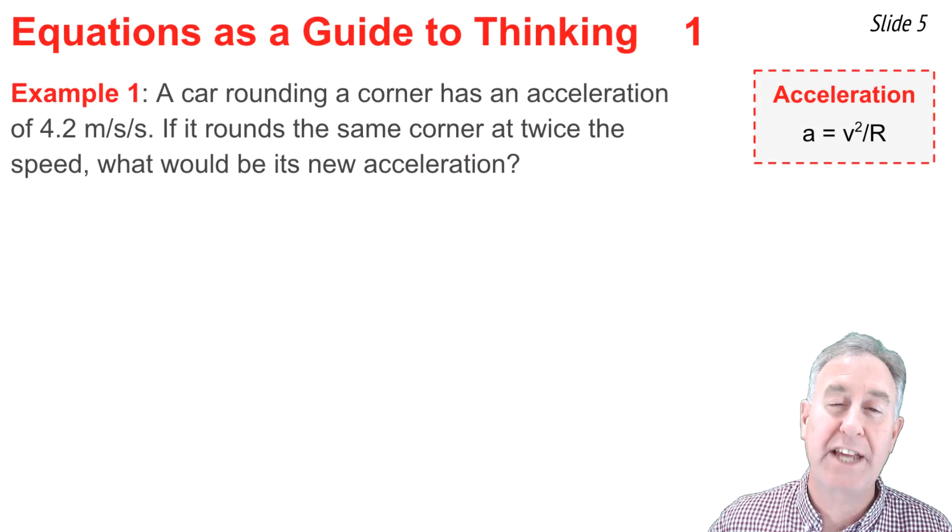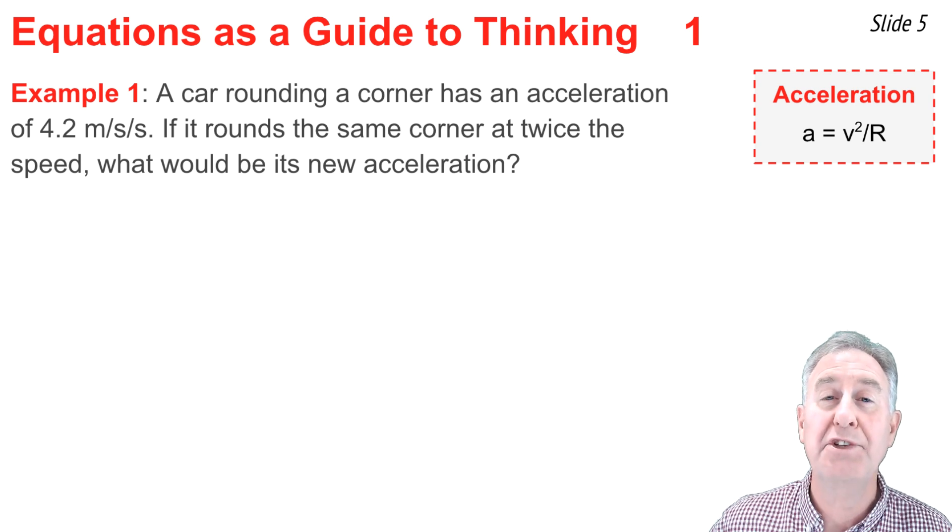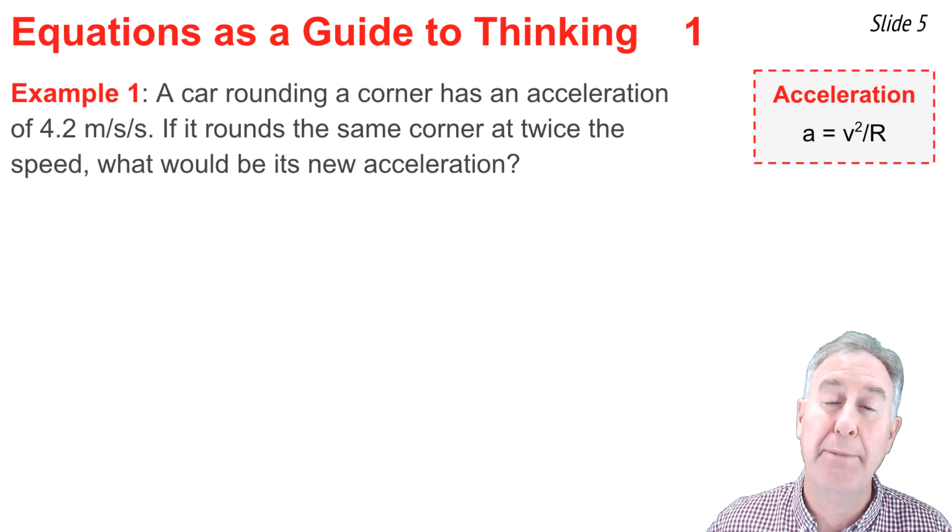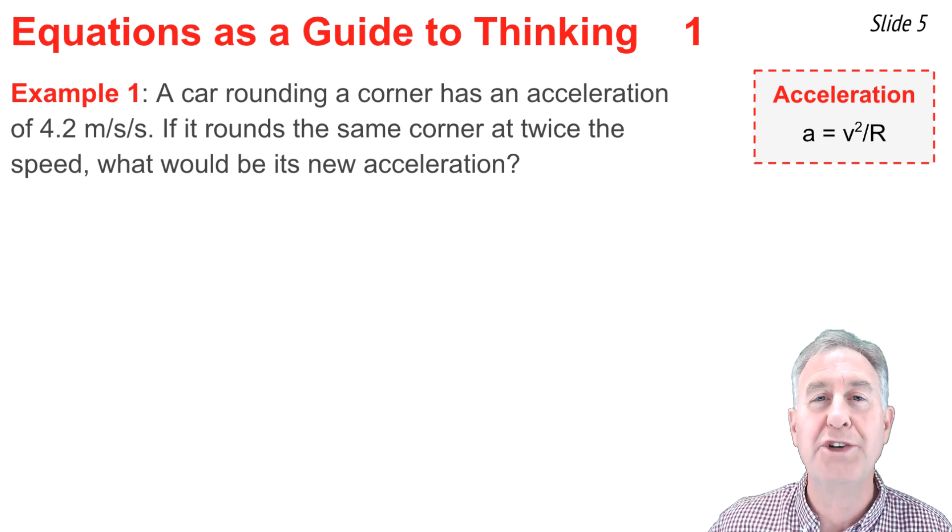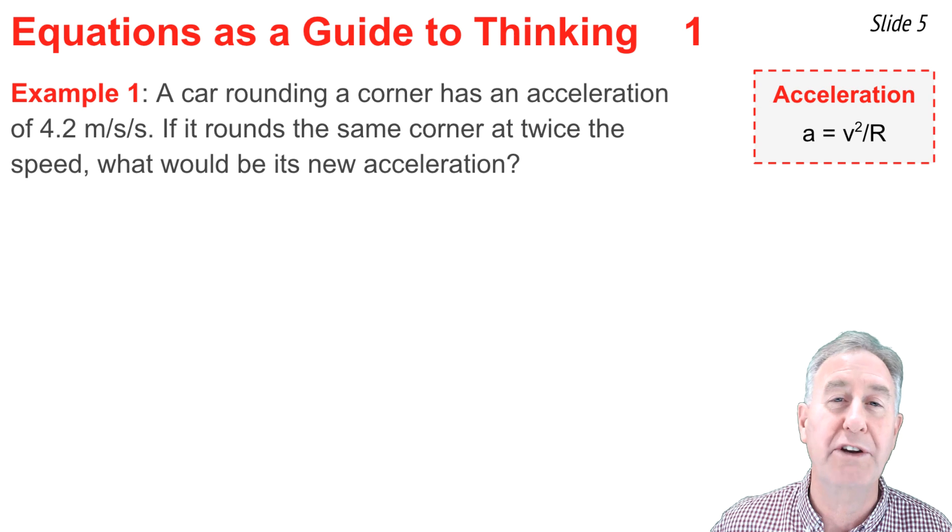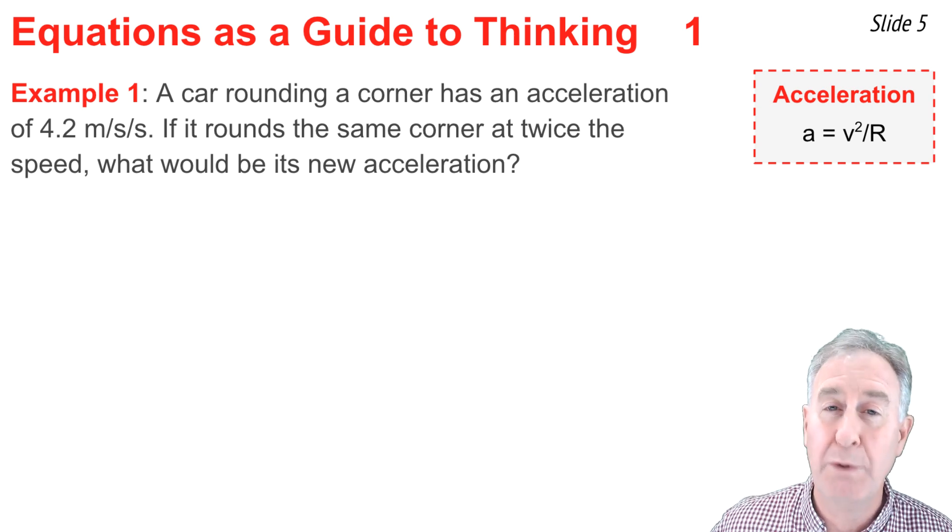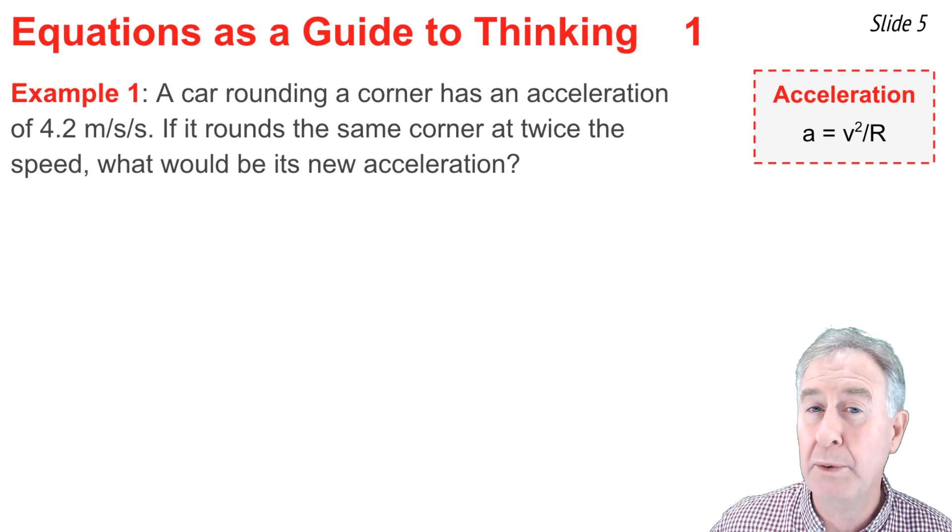In this video, I'll be using five examples to demonstrate both types of usage of these physics equations. In the first three examples, I'll be demonstrating how to use the equations as a guide to thinking about how a change in one variable affects another variable. In our first example, a car is rounding a corner with an acceleration of 4.2 meters per second squared. If it rounds the same corner with the same radius, but with twice the speed, what would be its new acceleration?